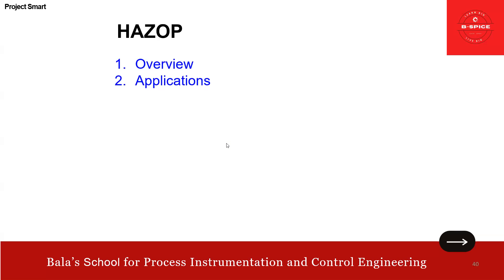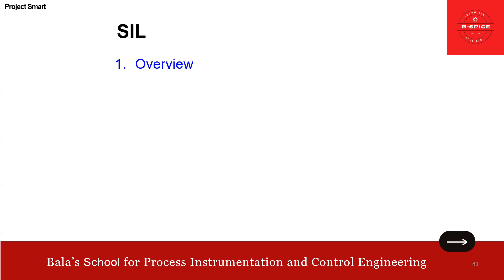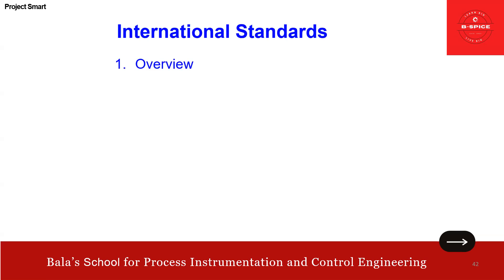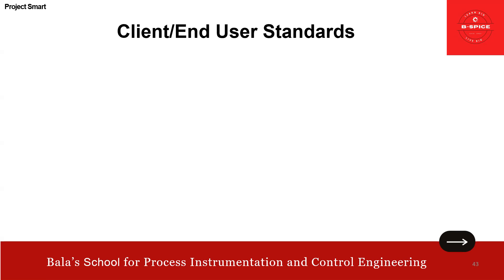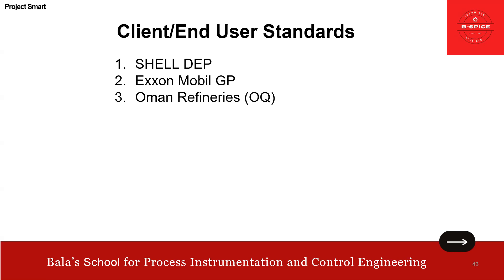HAZOP — already covered extensively, you can watch and get benefited. SIL — recently uploaded: classification, verification, and international standards covered extensively from A to Z. It was well received. I also want to touch upon Shell DEP, ExxonMobil GP, Oman refineries specification, ADNOC, and Saudi Aramco. I can't share documents due to copyright, but I can share based on my experience — I worked for Shell, was a team leader at Oman refineries, and worked on some Saudi Aramco projects.